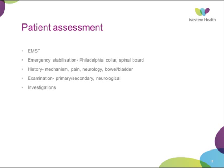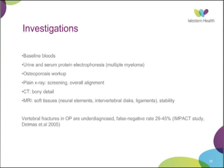For investigations: all patients should have baseline bloods. In some fractures, particularly in the older age group, they can be due to pathological causes, so a multiple myeloma screen may be needed, and obviously an osteoporosis workup. Plain x-ray is a baseline screening tool, good for assessment of overall spinal alignment. CT gives more bony detail, and MRI gives soft tissue detail — very important in determining posterior ligamentous complex disruption, looking at ligaments and intervertebral discs to determine stability. Notably, in osteoporosis there is a high false-negative rate of 29 to 45% on plain x-rays for fractures, as seen in the IMPACT study. In Australia we're at the lower end of 29%, but still many are being missed.